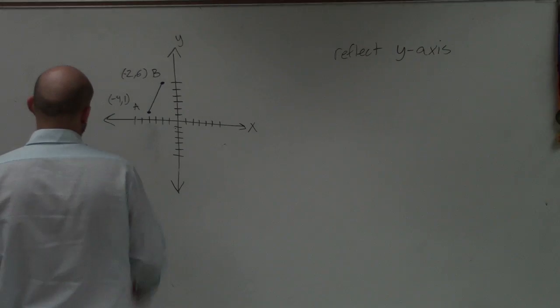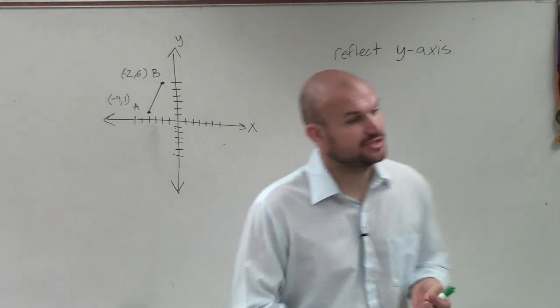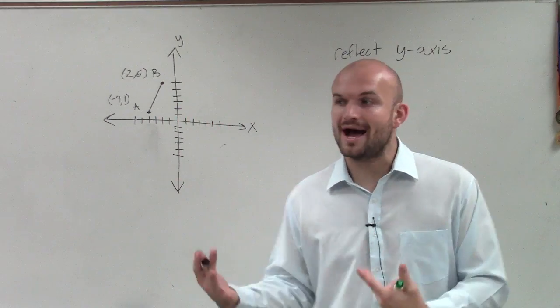Ladies and gentlemen, we have negative 4, 1 and point negative 2, 6 for our points. So now what we want to do is decide how to reflect over the y-axis.